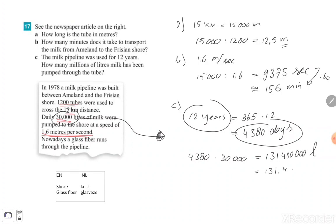Or you can say 131.4 million liters. So that's the answer from exercise 17C, when you needed to calculate the total liters in 12 years. So that was exercise 17.